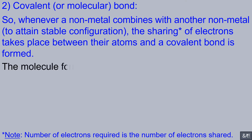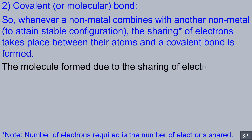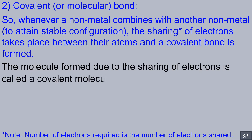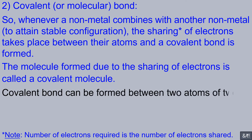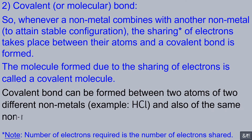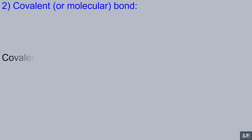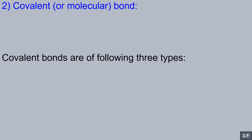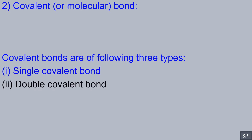The molecule formed due to the sharing of electrons is called a covalent molecule. Covalent bonds can be formed between two atoms of two different non-metals, e.g. HCl, and also of the same non-metal, e.g. H2. Covalent bonds are of three types: first, single covalent bond; second, double covalent bond; third, triple covalent bond.